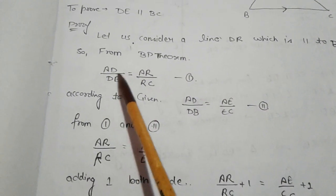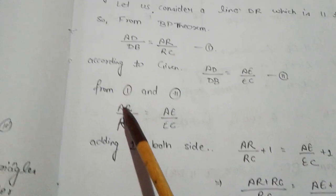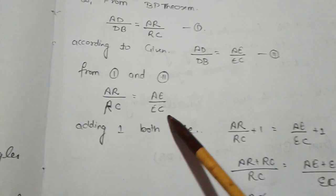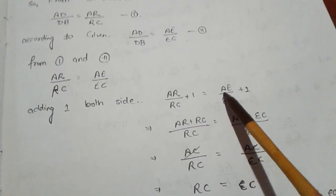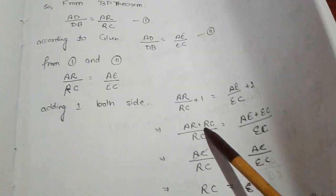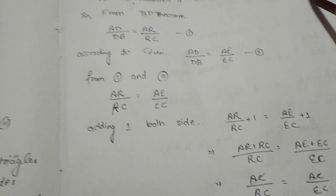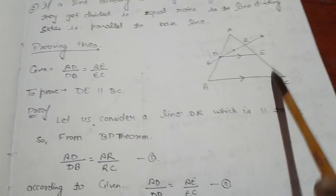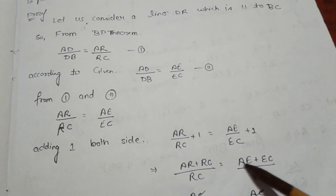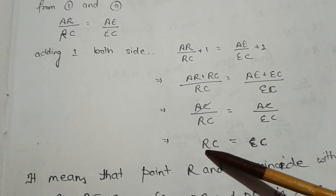Since AD upon DB appears in both equations, we equate them: AR upon RC is equal to AE upon EC. Adding one to both sides: AR upon RC plus one equals AE upon EC plus one, giving us AR plus RC upon RC equals AE plus EC upon EC. Now AR plus RC equals AC, and AE plus EC also equals AC. So AC upon RC equals AC upon EC, which gives us RC equals EC.